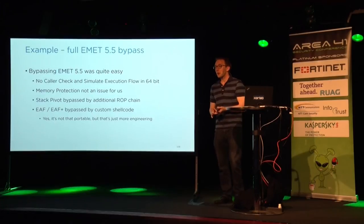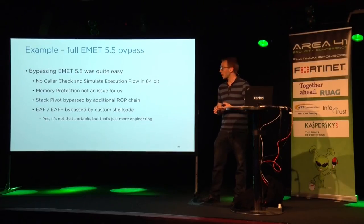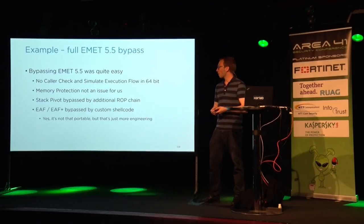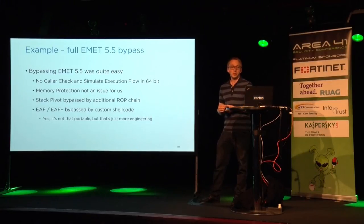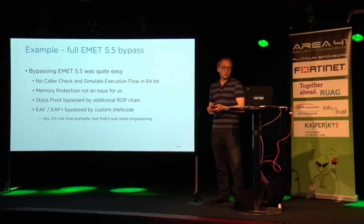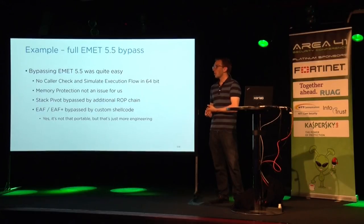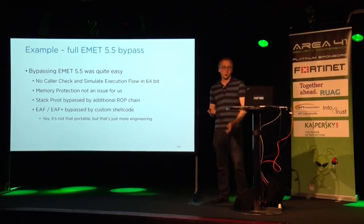For our constructed example, bypassing EMET was somewhat easy because there are no caller checks and no simulated execution flow checks in 64-bit. The memory protection issue didn't really matter for our case. Stack pivoting checks could be bypassed by copying the ROP chain to the stack. The EAF check was bypassed with custom shellcode — with some more engineering you could make the custom shellcode more reliable rather than relying on specific library versions.